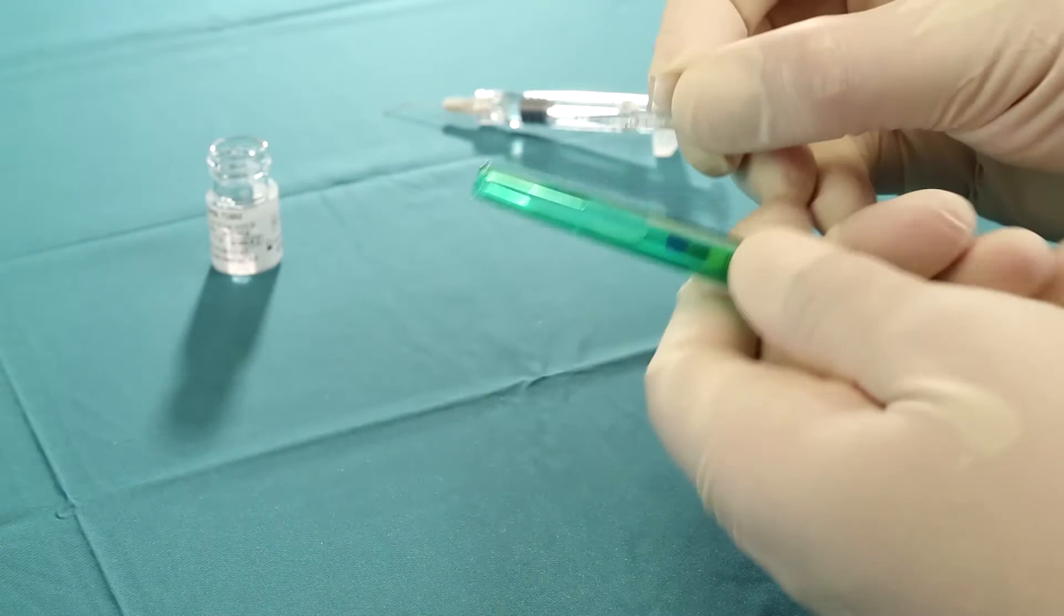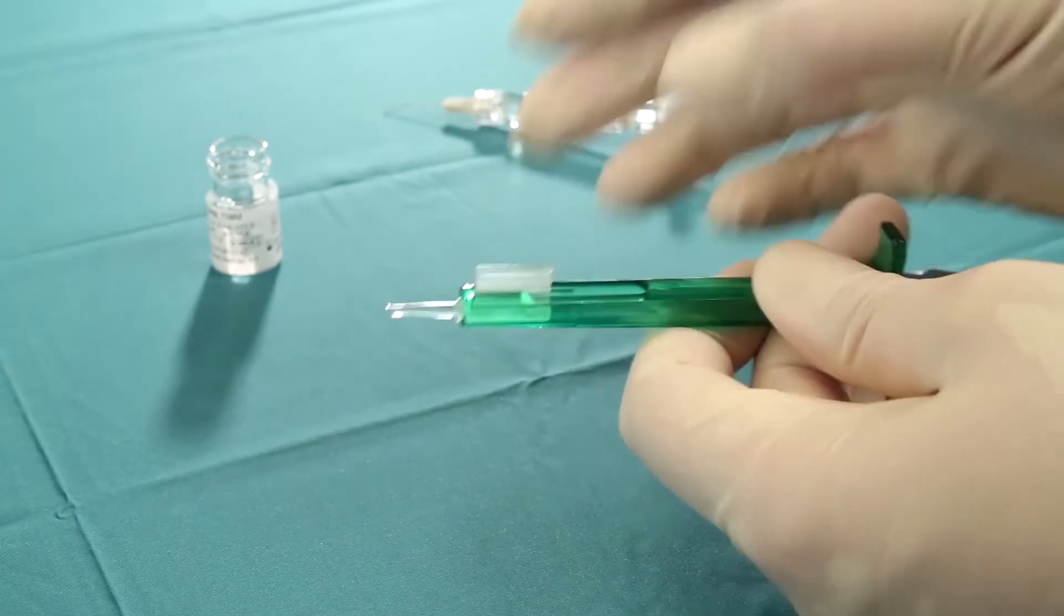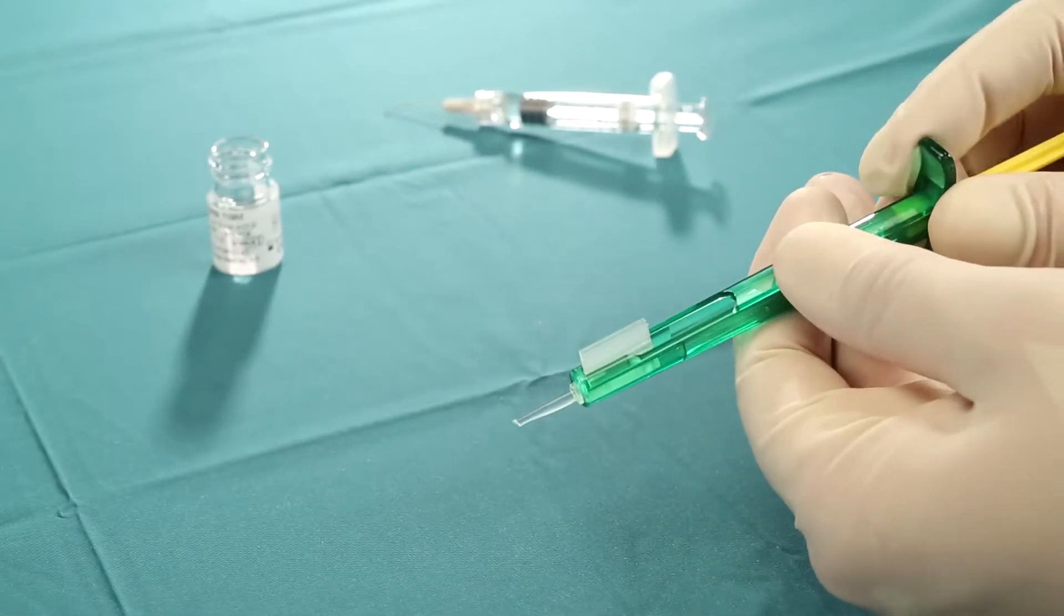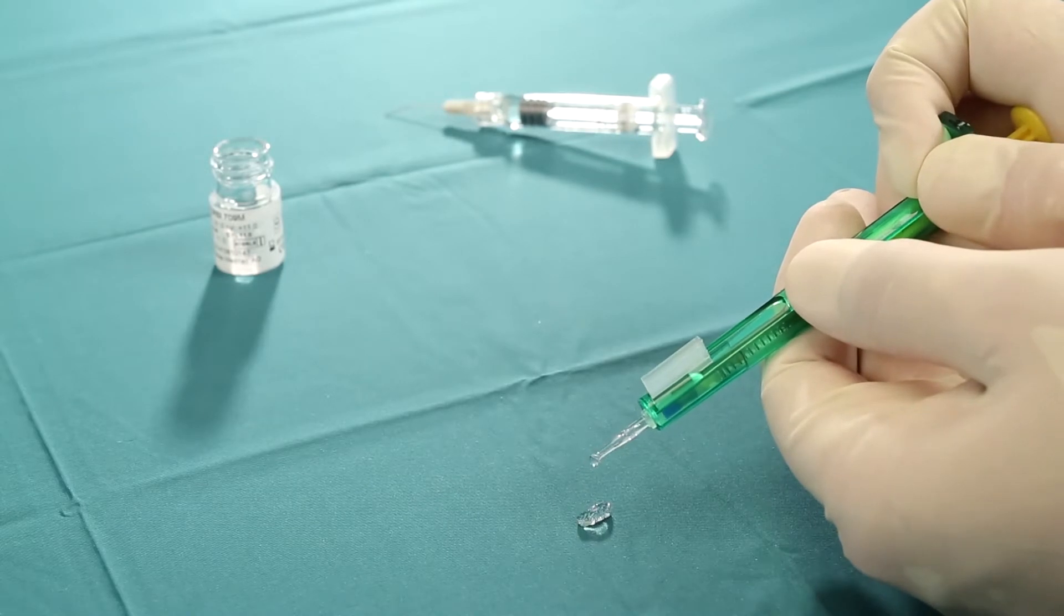Place the cartridge into the injector and move it forward as far as it will go. The lens is ready for implantation. Place the beveled edge downward and gently push the plunger to inject the IOL.